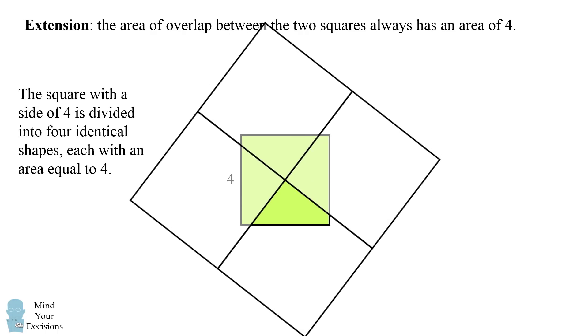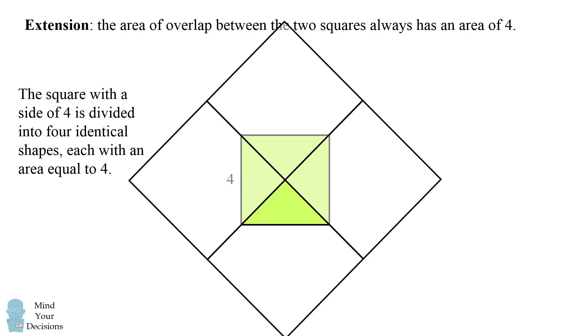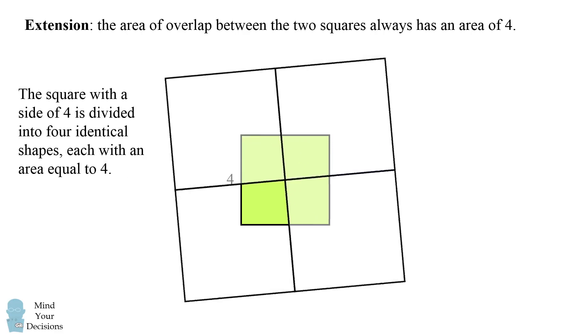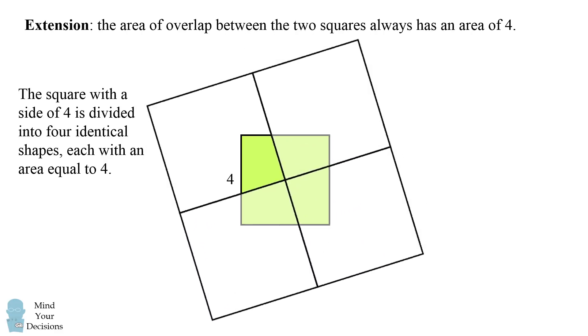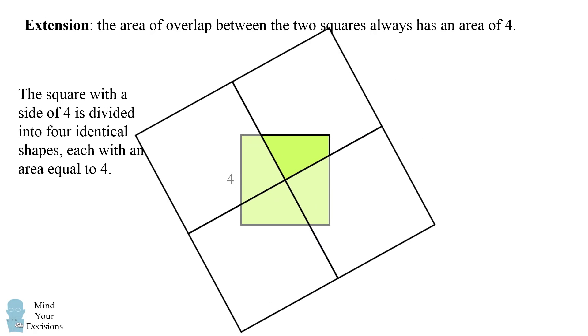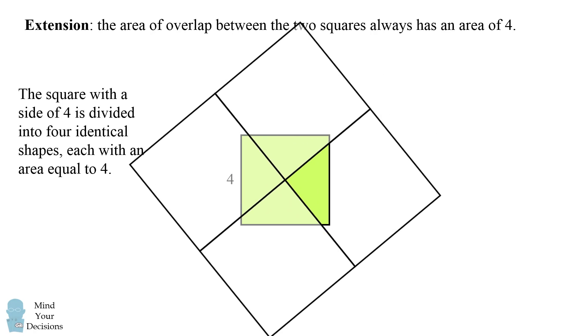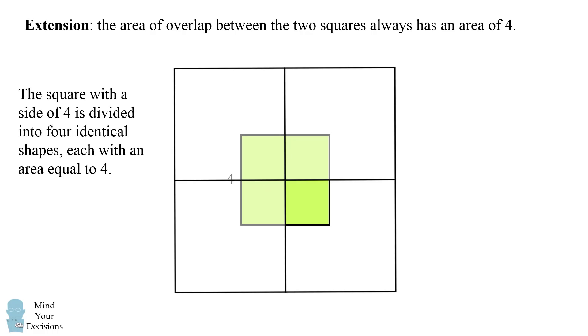Now we can continue this symmetry as we rotate the larger squares. The square with a side length of 4 is always divided into four different identical shapes, therefore each will have an area that's one-fourth the area of the square.